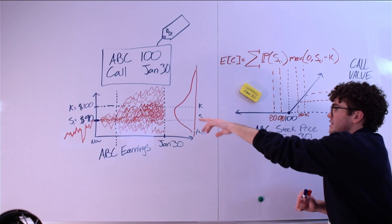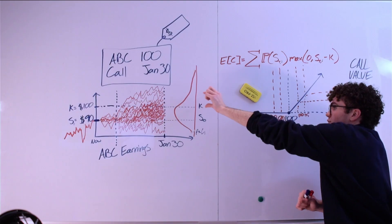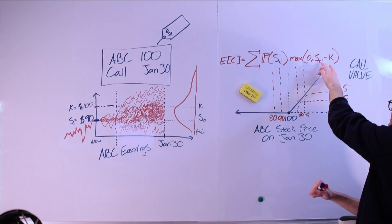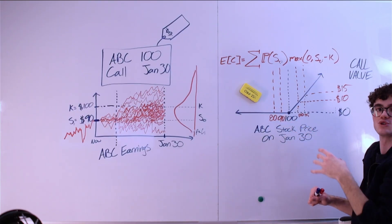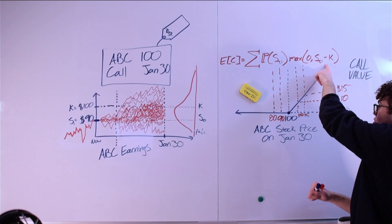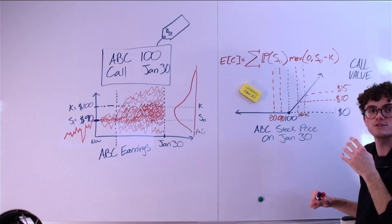We sum the probability of each ending price for ABC times the value of the call option at that price. The value of the call option in the event that the ending price of ABC is greater than the strike price is just going to be that difference. It's going to be the price of ABC, let's say that's maybe $102, minus the strike price, which is what we're going to have to pay for that stock, that's $100, which would be $2 in that case. If the ending price of ABC is lower than that price, then the option is just going to be worth $0 because it wouldn't make sense to exercise this.